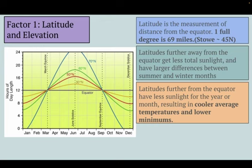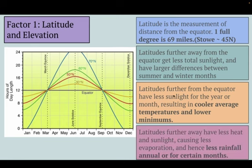Locations further from the equator tend to have cooler average temperatures and lower minimums — the further away you are, the less heat you will have on average and the colder your temperatures will be. That's the general outcome of latitude on temperature. And when it comes to rainfall, the further away you are, the less heat and sunlight you have, which makes rainfall evaporate less, so we would expect less rainfall annually or for certain months depending on your location and its season.